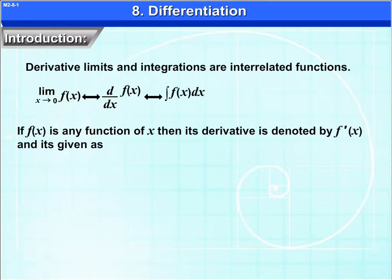If f is any function of x, then its derivative is denoted by f prime and it is given as f prime is equal to limit of f of x plus h minus f of x upon h as h tends to 0.